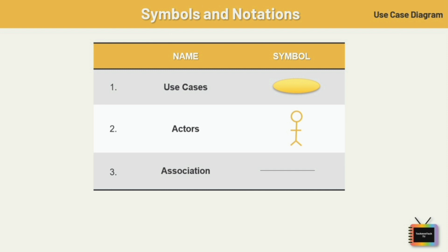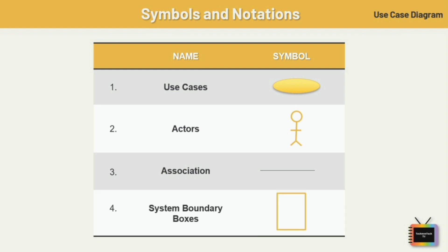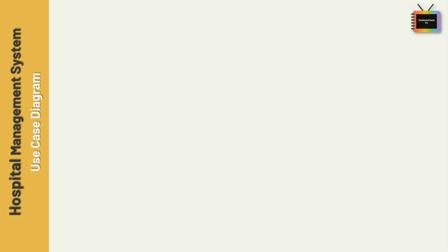Next are associations — a line between actors and use cases. In complex diagrams, it is important to know which actors are associated with which use cases. Last are system boundary boxes — the rectangular boundary is the system; use cases fall inside it and actors are placed outside it.